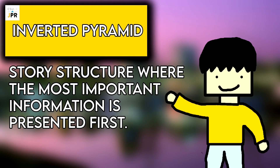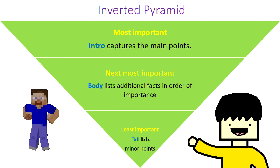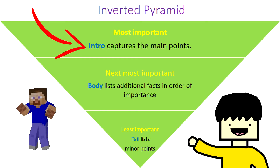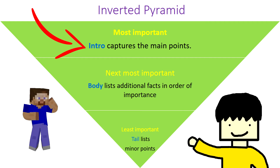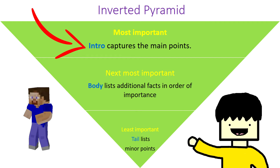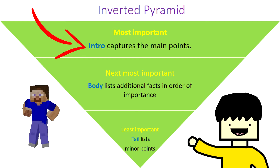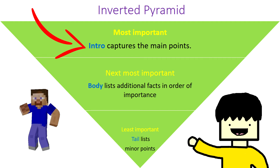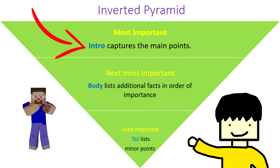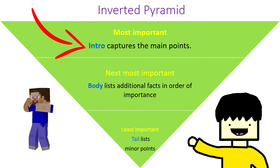In journalism, the inverted pyramid is a story structure where the most important information is presented first. Here's an inverted pyramid right here. As you can see, at the top you put the most newsworthy information — the most important, juicy stuff — the who, what, when, where, why, and how. This is also where the lead is going to be, the most important part of the story to capture the reader's attention.